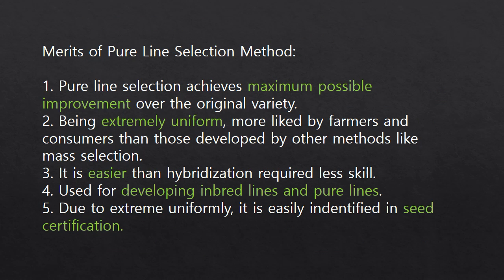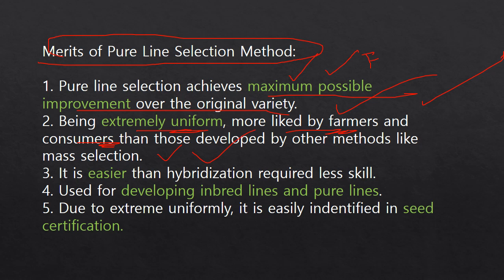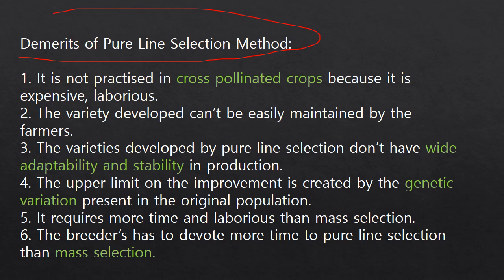The advantages of pure line selection are: it achieves the maximum possible improvement over the original variety, as the final product is always the maximum possible yielding variety. Being extremely uniform, it is more liked by farmers and consumers, and it plays an obvious role in farming economy and agronomy. It is easier than hybridization and requires less skill. It is also useful for developing inbred lines, and due to extreme uniformity it is easily identified in seed certification programs.